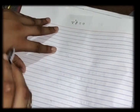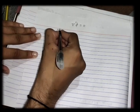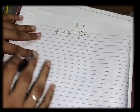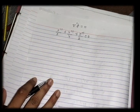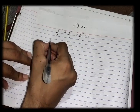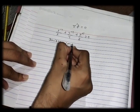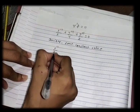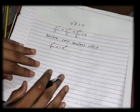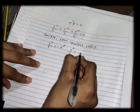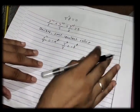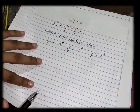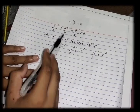Since del-squared phi = 0, putting in the separated form: X''/X + Y''/Y + Z''/Z = 0. To solve this, we assume some constants. Let X''/X = −α², Y''/Y = −β², and Z''/Z = γ². Now substituting these constants into the equation: −α² − β² + γ² = 0, which gives us the relation α² + β² = γ².